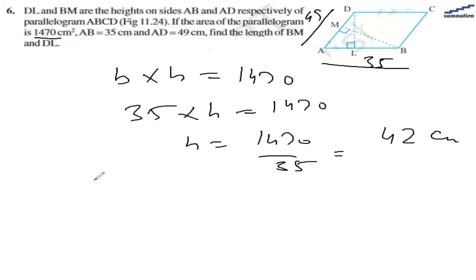In the second case, we take base as ED. The base length is 49, so height will come out to be 30 cm. Therefore, DL is 42 cm and DM is 30 cm.